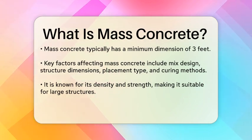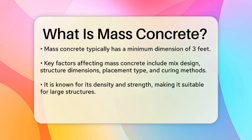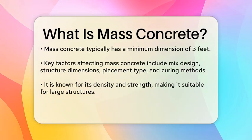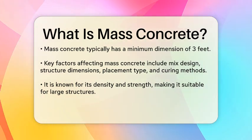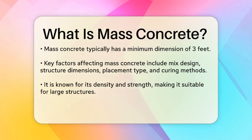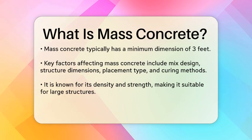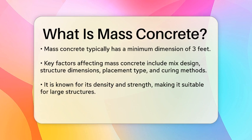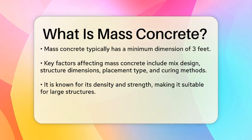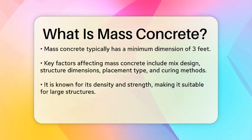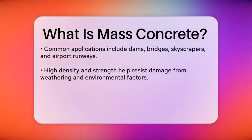One way to think about it is to consider the minimum dimension. While the definition has evolved, mass concrete is generally any placement of normal structural concrete that has a minimum dimension equal to or greater than 3 feet. The key factors here include the concrete mix design, the dimensions of the structure, the type of placement, and the curing methods. All these elements play a crucial role in determining whether cracking will occur.